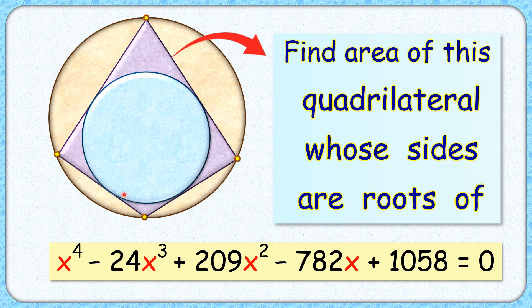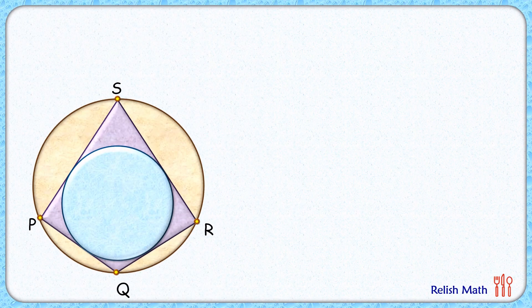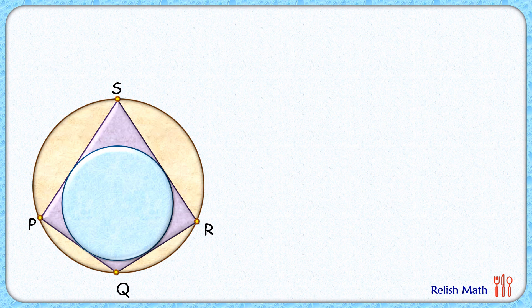The sidelines of this quadrilateral are the roots of this biquadratic equation. The exciting part is that with this limited data, we have to find the area of this bicentric quadrilateral. Let's check this simple and elegant solution.